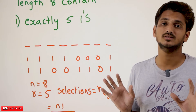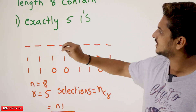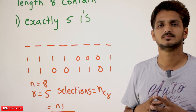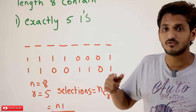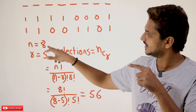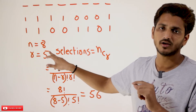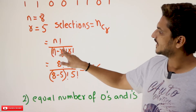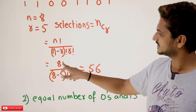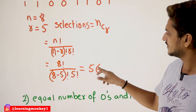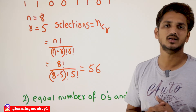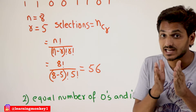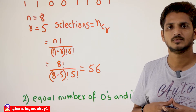For better understanding: there are 8 positions, and from these 8 positions you need to select any 5 positions. The formula for selection is nCr, where n = 8 and r = 5. So nCr = n! / ((n−r)! × r!) = 8! / (3! × 5!) = 56. So there are 56 different selections, and in those selected positions we place exactly 5 ones.